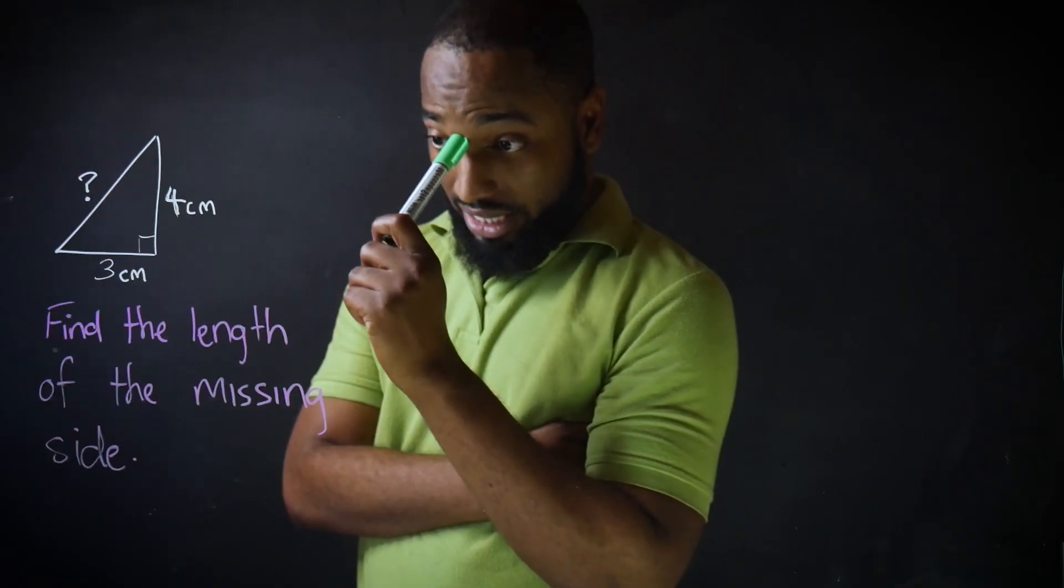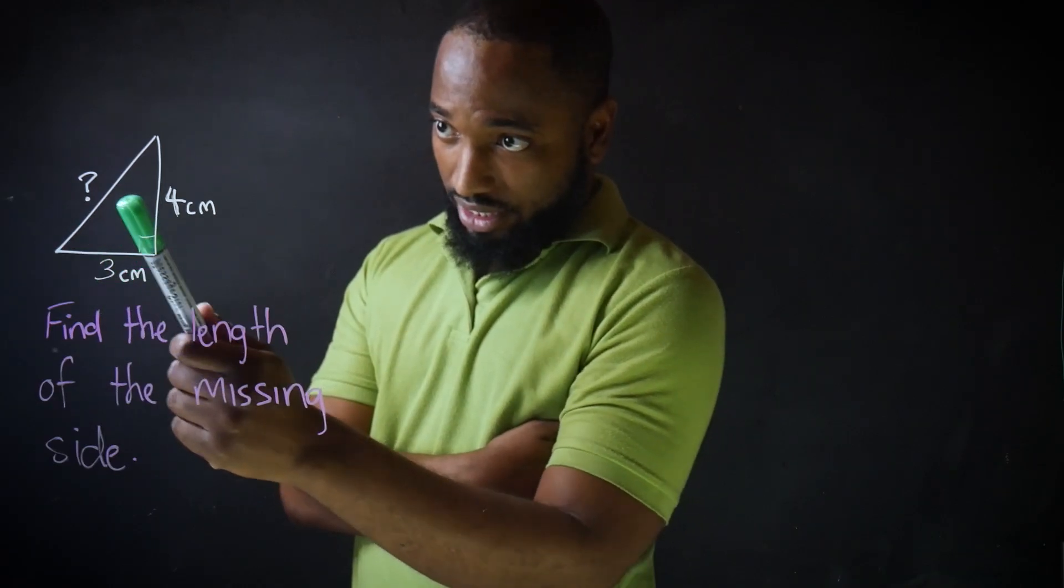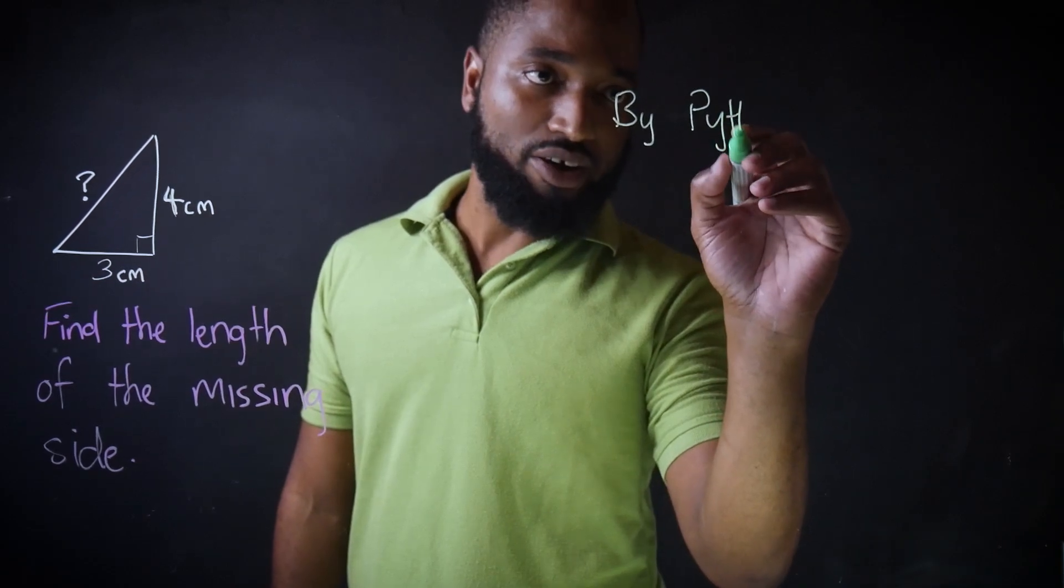Find the length of the missing side. What side is missing? That's the hypotenuse because it's opposite the right angle. So here's the weekend. By Pythagoras' theorem.